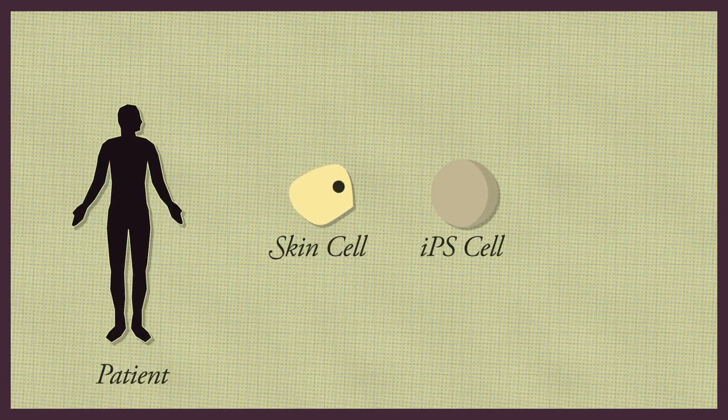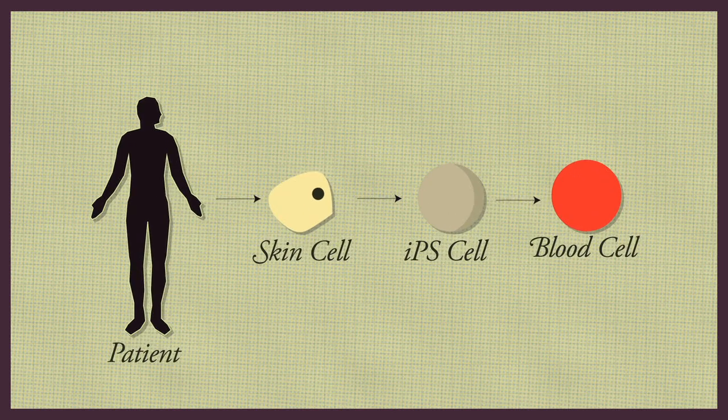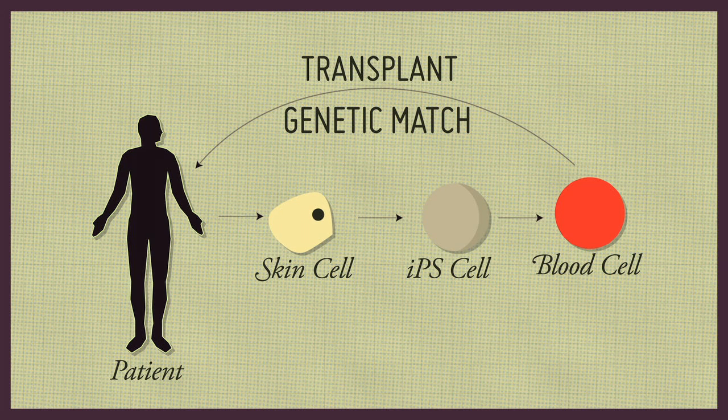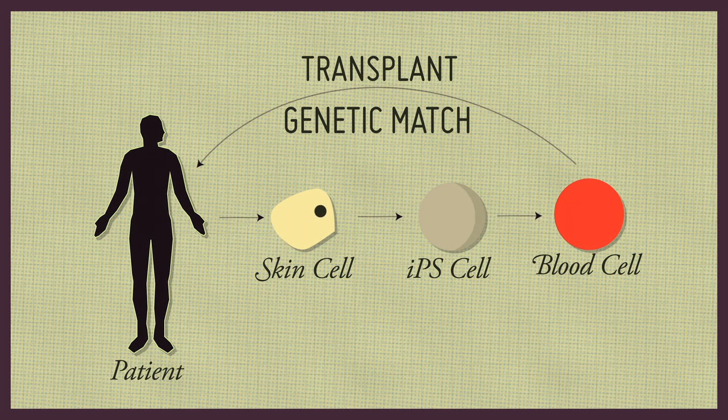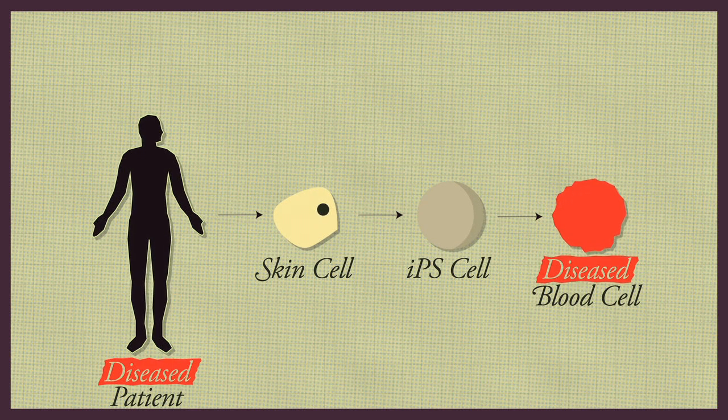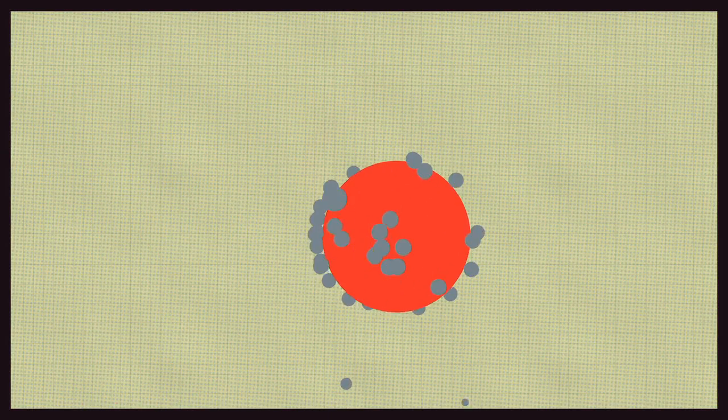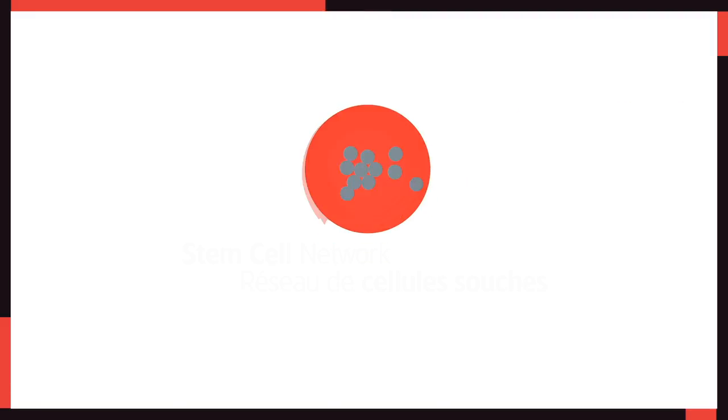The creation of IPS cells from individual patients may one day allow us to develop replacement tissues that are a perfect genetic match to the patient. In addition, the creation of IPS cells from patients with specific diseases will allow scientists to develop new drugs to treat a wide variety of disorders.